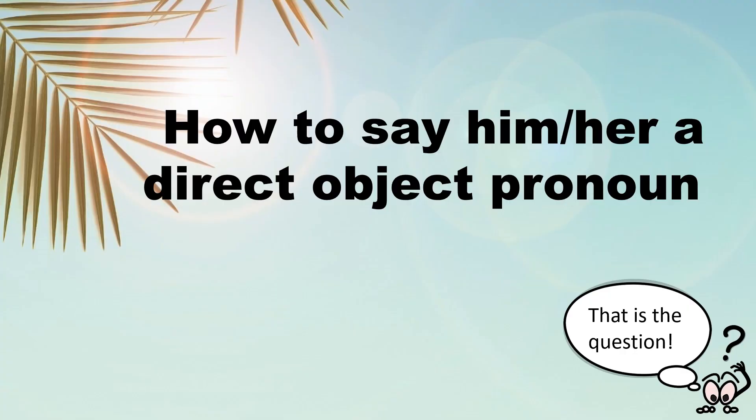There are two types of object pronouns. We have the direct object pronouns and the indirect object pronouns. So today we're going to look at him or her, and to him and to her. Let's start with the direct object pronouns.